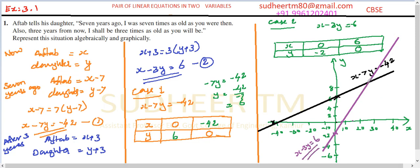From the graph, we approximate the coordinates of the intersection of the two lines, which gives the ages. The daughter's age is approximately 8, and Aftab's present age is approximately between 25 and 30. This is the graphical method for solving a system of two-variable linear equations.